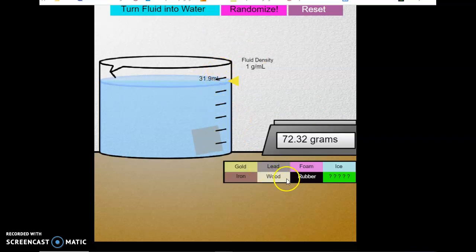You repeat it for all these materials: gold, lead, foam, ice, iron, wood, and rubber. This is what experiment one is about. No matter what size or shape, based on the mass and volume, that is the deciding factor for the density of any material. That is what you will understand from this experiment.